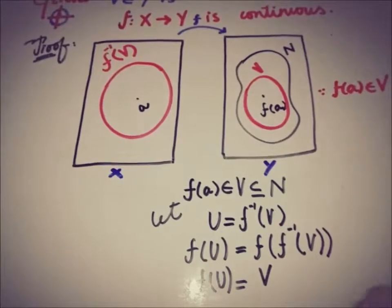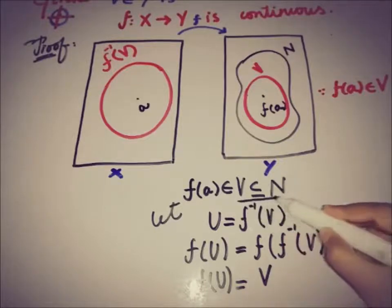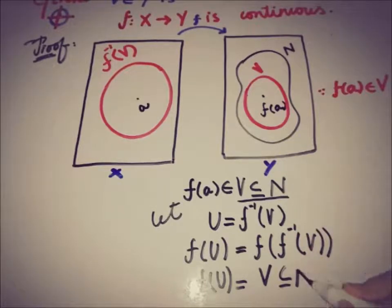This implies that the image of U is equal to V and V is eventually the subset of N. This is the final result here. The main thing that we have to get from this relation is f(U) is a subset of N, where N is the neighborhood of the image of a and f(U) is the open set.